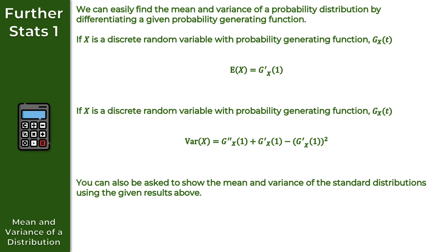You can also be asked to show the mean and variance of standard distributions using these results. That includes the binomial, Poisson, geometric, and negative binomial distributions — finding both the expectation of x and the variance of x. These results are given in the formula book, so you don't have to worry about memorizing them, which is always a good thing. Let's now take a look at some practice questions on the mean and variance of a distribution.